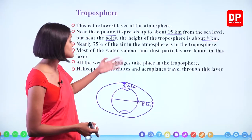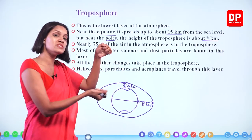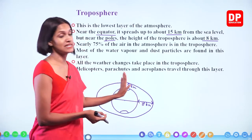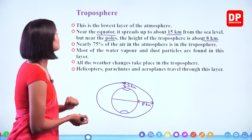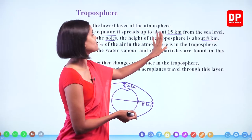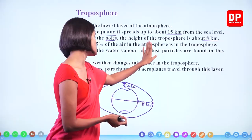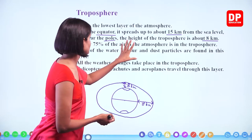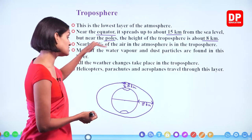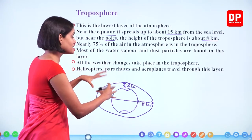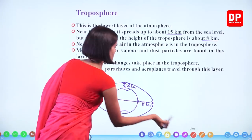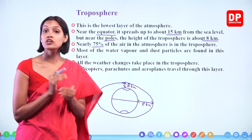Nearly 75% of the air in the atmosphere is in the troposphere — most air particles are present in this closest layer. Most of the water vapor and dust particles are also found in this layer. Water vapor comes from water bodies evaporating during the day, and also from plants transpiring — releasing water as water vapor. Because this layer is closest to the ground, more dust particles are also present here.